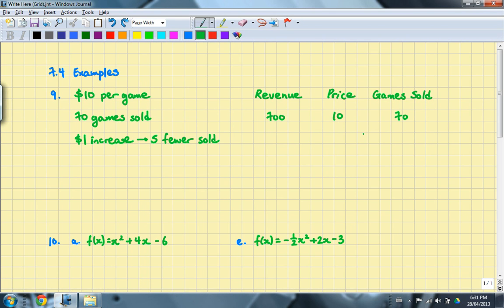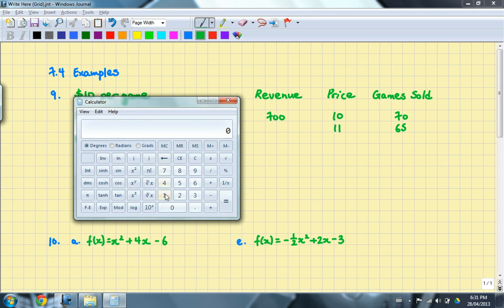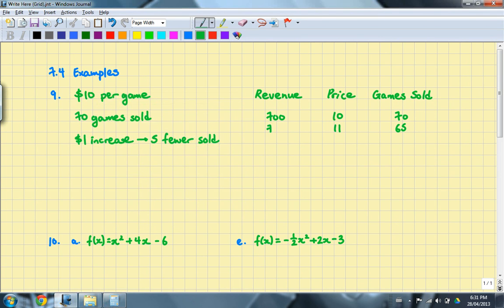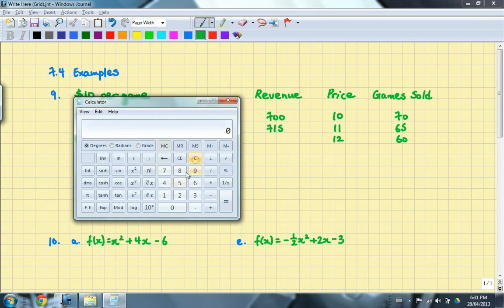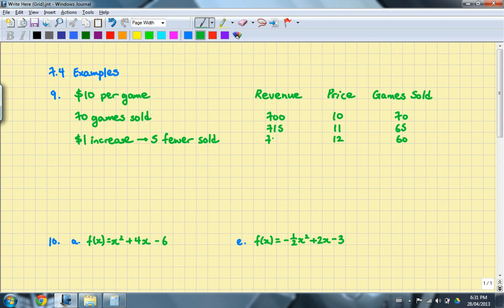So let's look at the revenue. If it's $10, that will be 70 sold. So for the first price increase, that will be $11, but only 65 games will be sold. So if I go to a calculator and calculate the revenue, that will be $715. So if I do one more increase here, that will be $12 per game and I'll only sell 60 games and that will give me the revenue of $720.